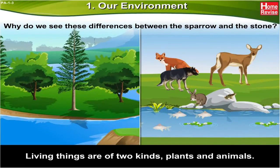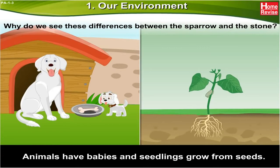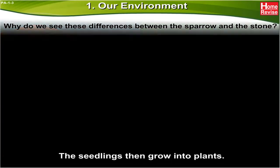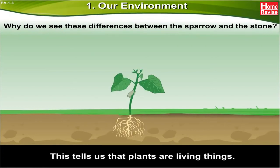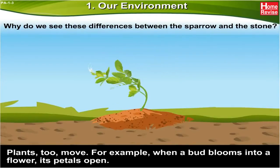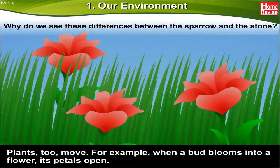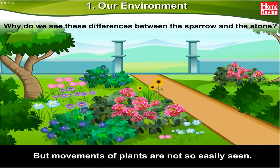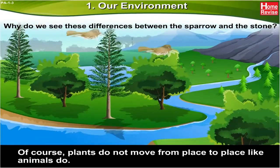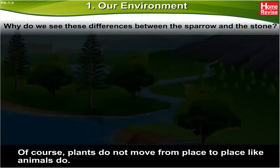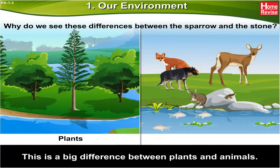Living things are of two kinds: plants and animals. Animals have babies and seedlings grow from seeds. The seedlings then grow into plants — this tells us that plants are living things. Plants do move; for example, when a bud blooms into a flower its petals open, but movements of plants are not so easily seen. Plants also need food. Of course, plants do not move from place to place like animals do — their roots hold them down in one place. This is a big difference between plants and animals.